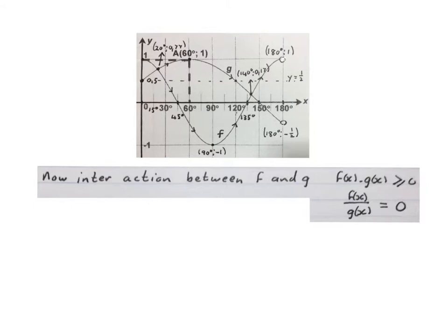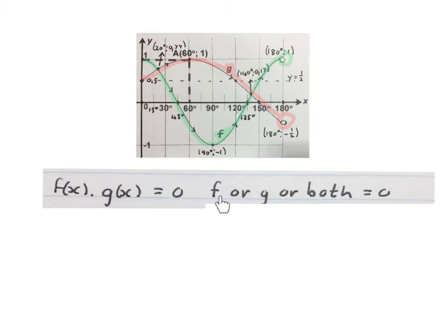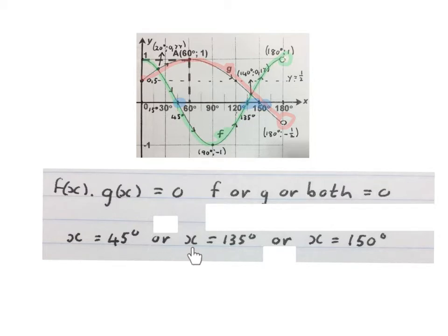Now we're going to do interaction between f and g — things like f of x times g of x, or f of x divided by g of x, being equal to or bigger/smaller than something. This question asks where is f of x times g of x equal to zero. With multiplication, if one of them equals zero the answer will be zero. So the answer is x equals 45 degrees or x equals 135 degrees or x equals 150 degrees — at those points either one or both of the graphs equal zero.